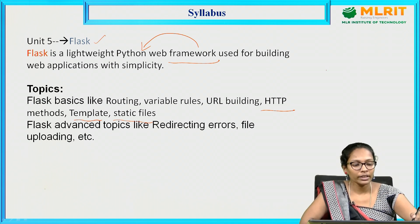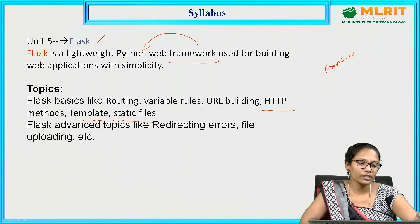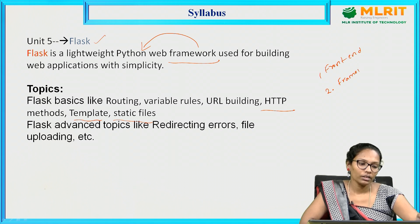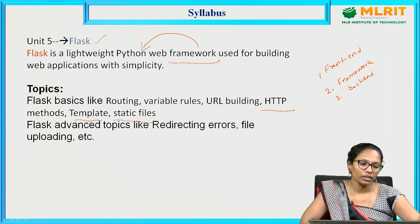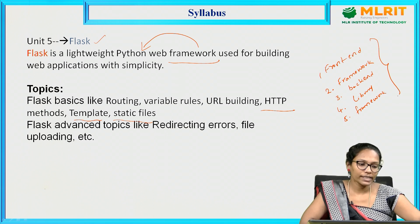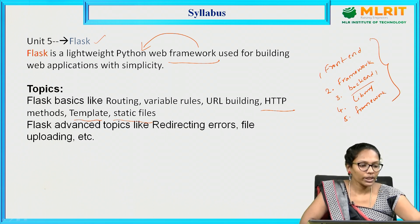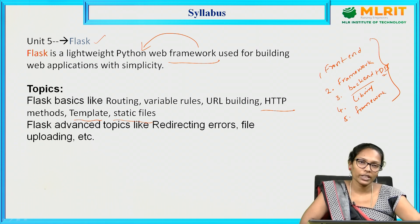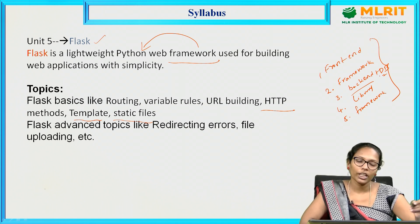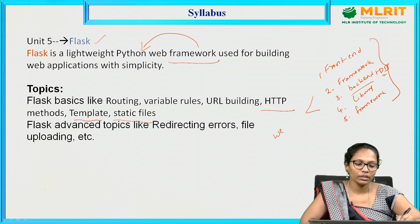To summarize the units: the first unit covers front end technologies, the second is a framework, the third is a back end technology, the fourth is a library, and the fifth is also a framework. Database is also included in the PHP unit. By learning all these technologies across all units, you will be able to design your own web page.